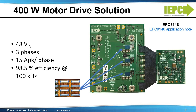Here we're showing a reference design for a three-phase motor drive — the EPC9146. The application note detailing this design can be found on the EPC website. The design is a 400-watt three-phase motor drive with a 15-amp peak per phase. The efficiency is 98.5% at 100 kilohertz PWM frequency.